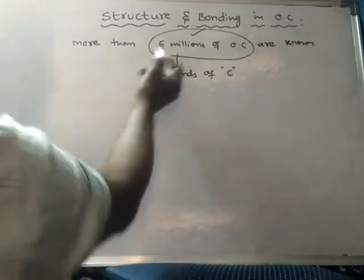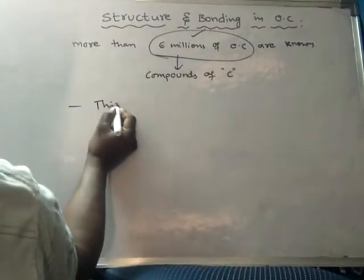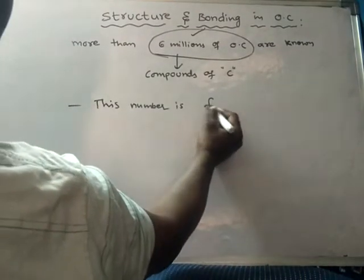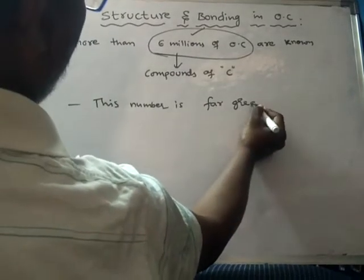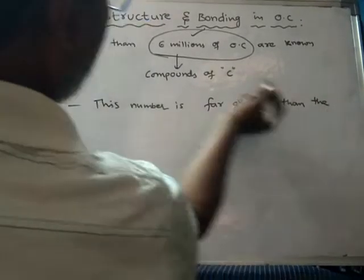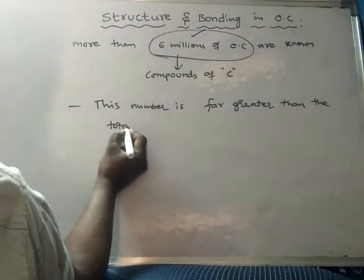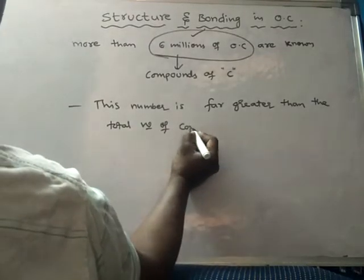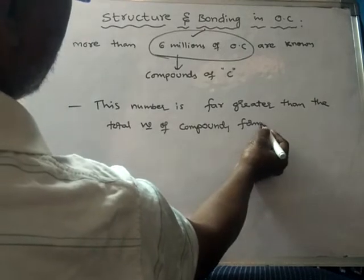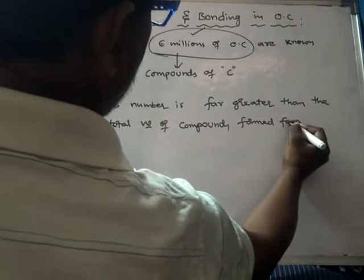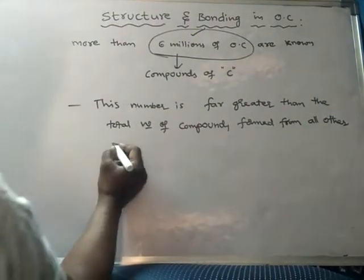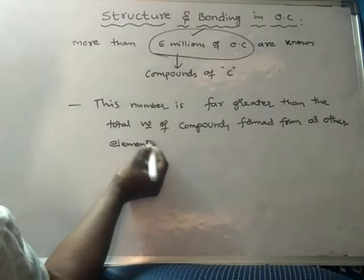This number, if you see this number, this number is far greater, far greater than the total number of compounds formed from all other elements.